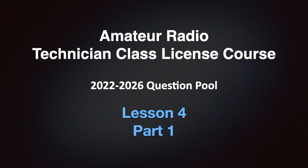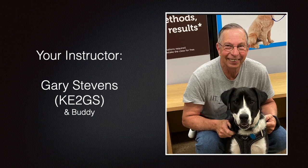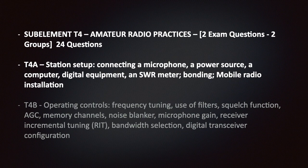Are you ready to learn? Let's get started. This video is Lesson 4, Part 1 of my amateur radio technician class license course, covering the 2022 to 2026 question pool. Hi, I'm Gary Stevens, your instructor. My call sign is Kilo Echo 2 Gulf Sierra. I hold an Extra license. I've been an amateur operator since 2001, an Amateur Extra since 2014, and I've been teaching amateur radio classes for over 15 years. The T4 section covers amateur radio practices. On your exam there will be two questions at random from this sub-element — there are two groups totaling 24 questions.